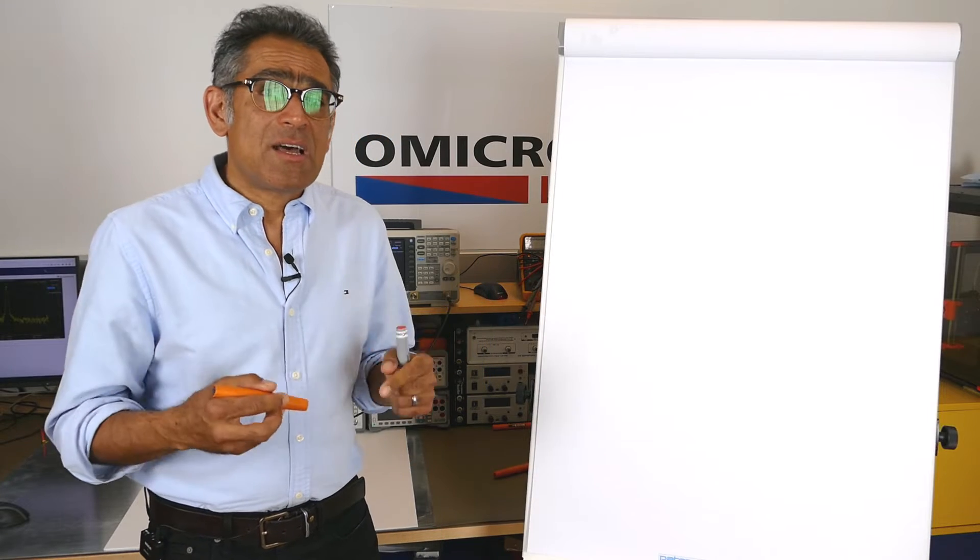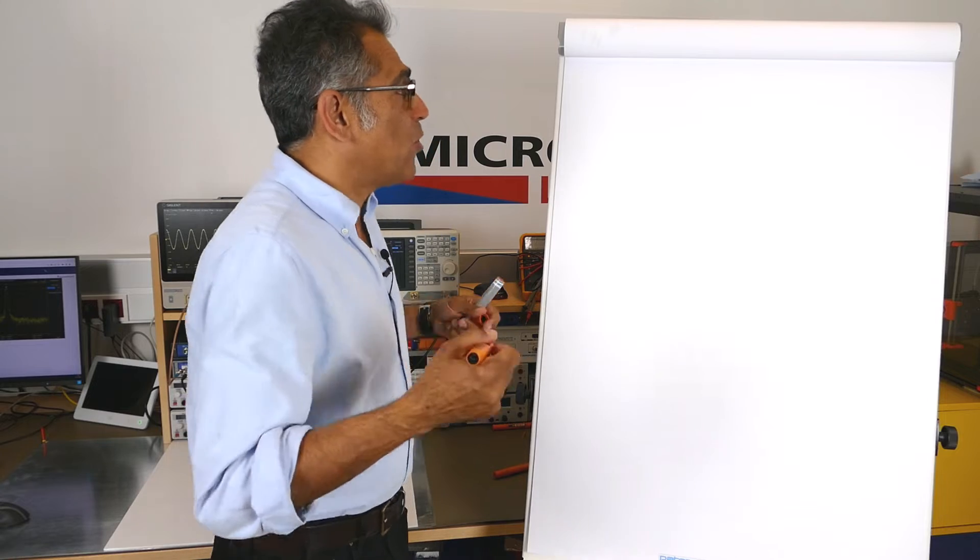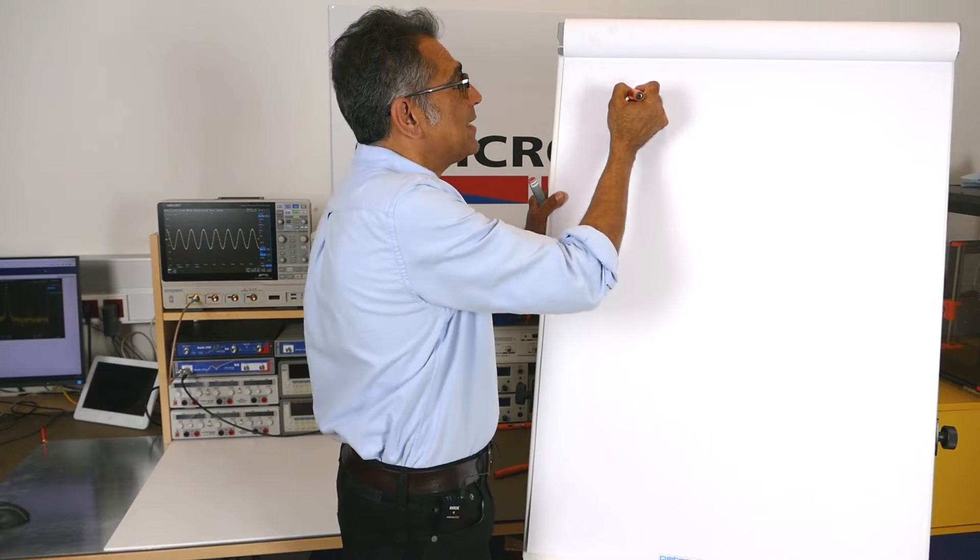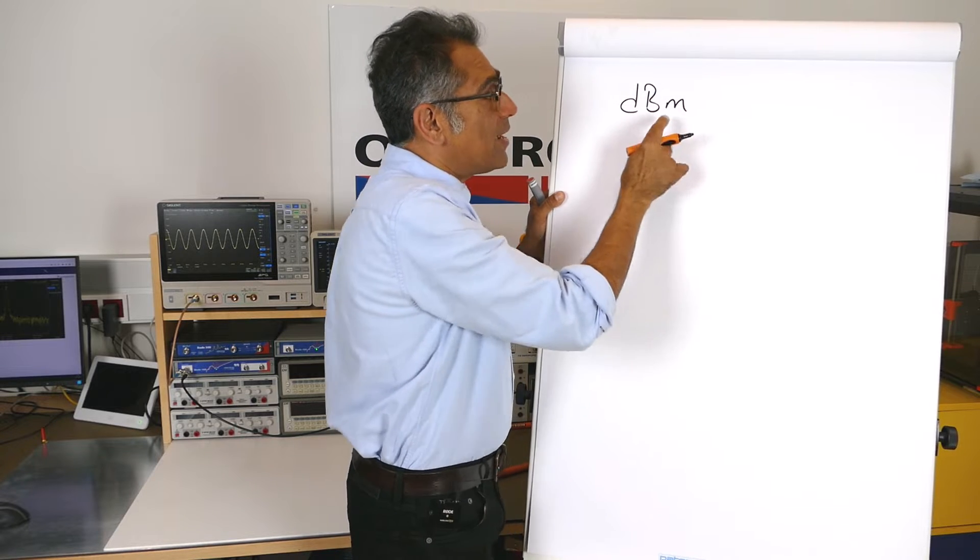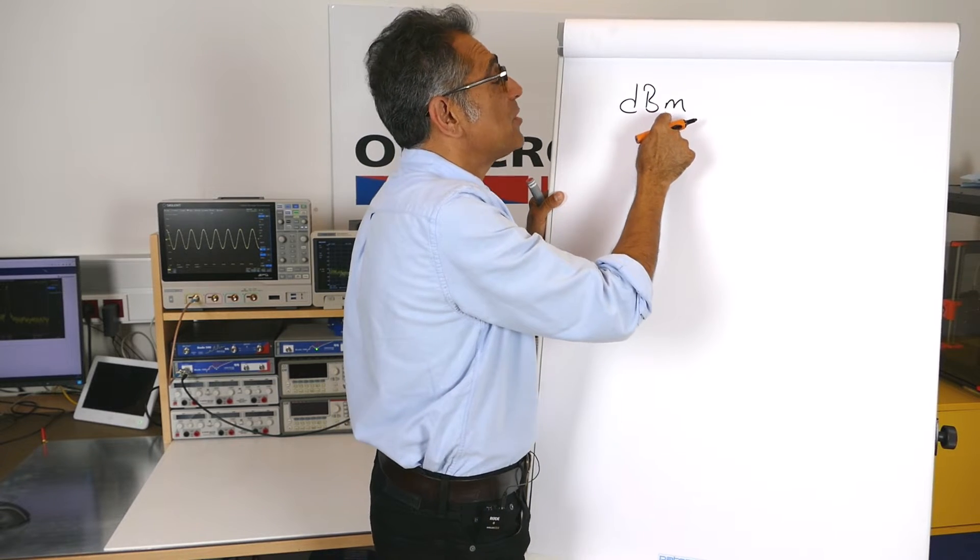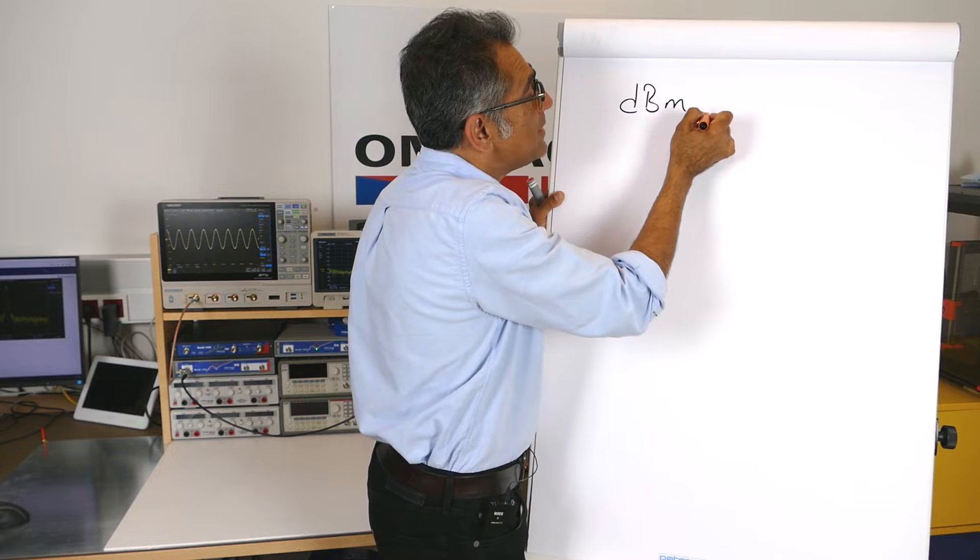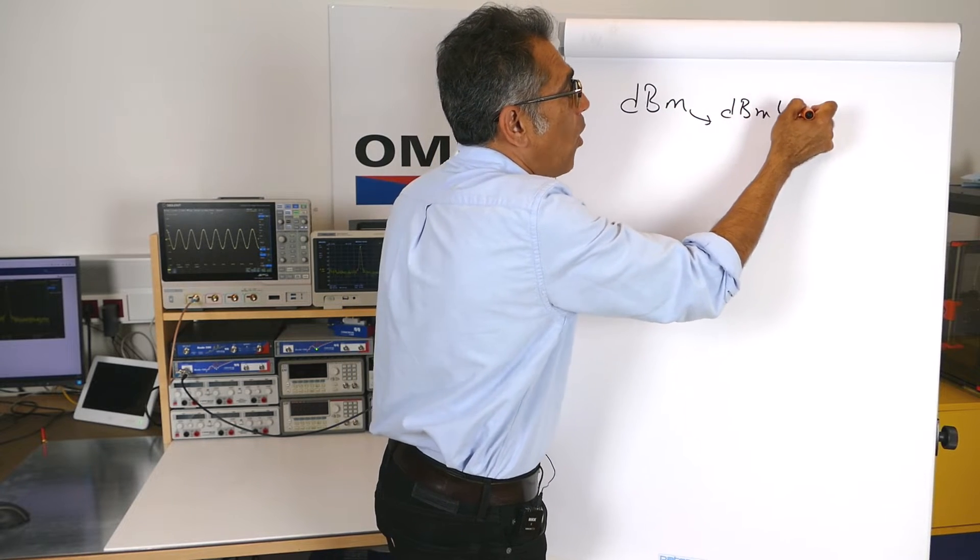Okay, so let us start with dBm first. Many equipment come on the output, but you see that the output is defined as dBm. This is in fact short for dBmW.